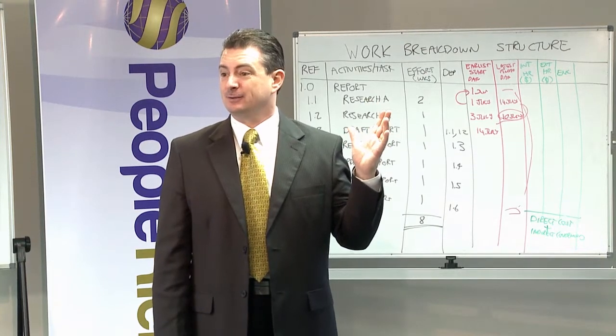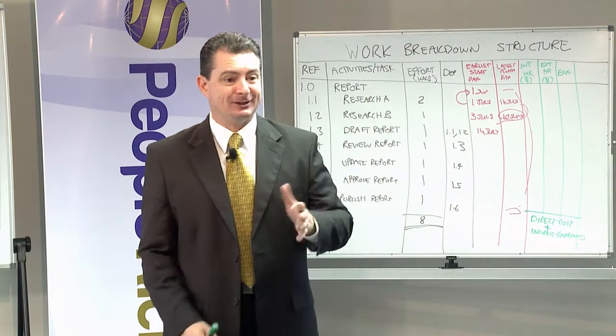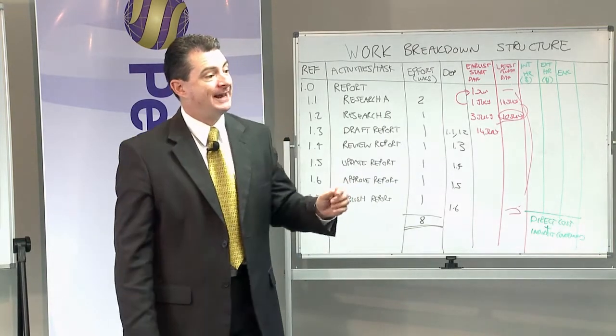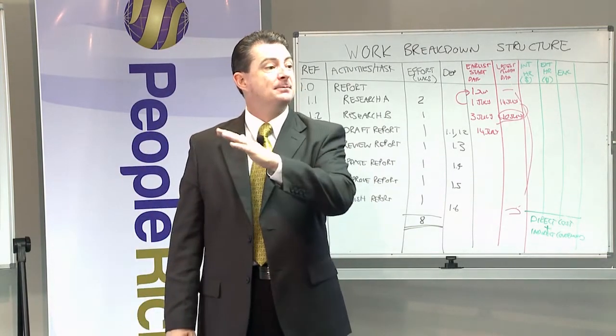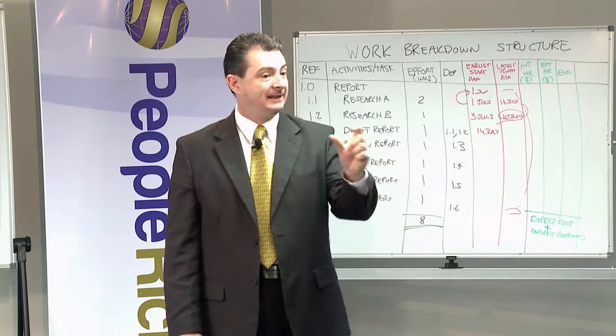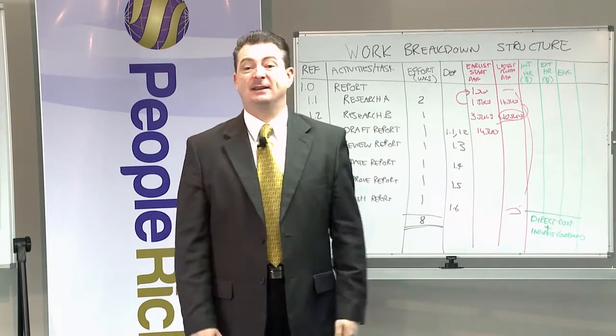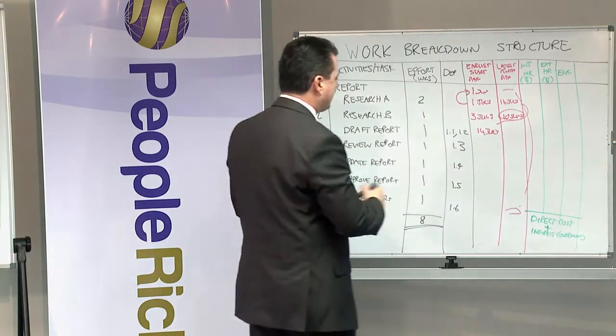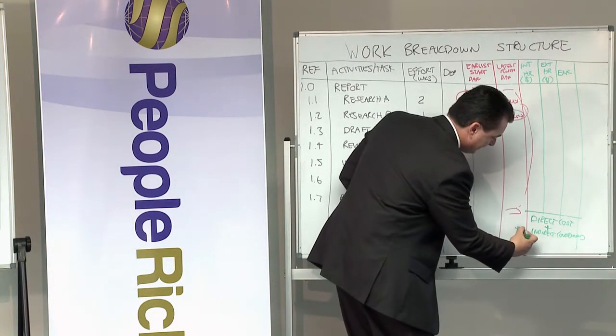It's an overhead cost, a cost of doing business. So often how organizations do it, they add a percentage. They might say plus 10% admin. Have you ever seen that written, plus 10% admin? They're actually saying add the indirect costs.